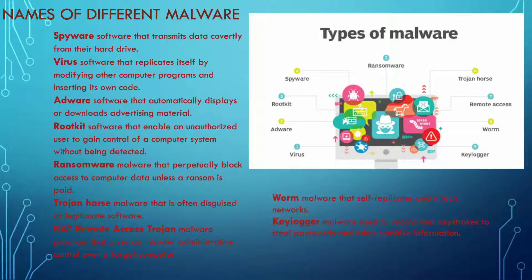There are different types of malware. Spyware is software that transmits data covertly onto your hard drive. A virus is software that replicates itself by modifying other computer programs. Adware is software that automatically displays or downloads advertising material. A rootkit is software that enables an unauthorized user to gain control of your computer system without being detected. Ransomware is malware that blocks access to your computer unless a ransom is paid.